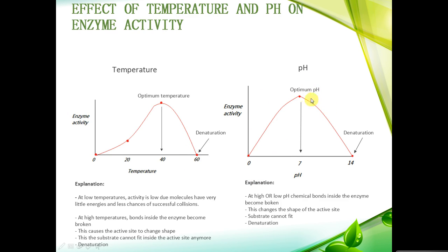Similarly, in pH, in this example here, pH of 7 is usually the optimum pH of an enzyme, and when you go higher than that or lower than that, bonds start to become broken in the enzyme, eventually leading to the change in shape of the active site, and once again, the substrate cannot fit, and denaturation occurs.